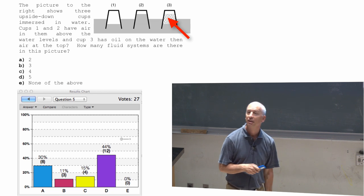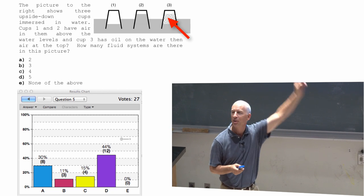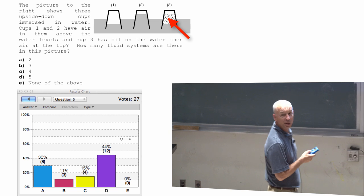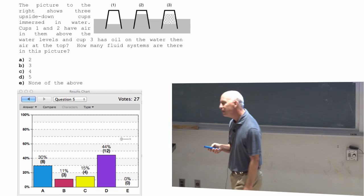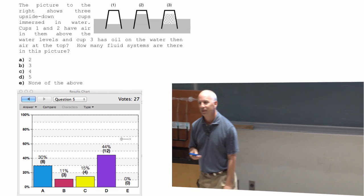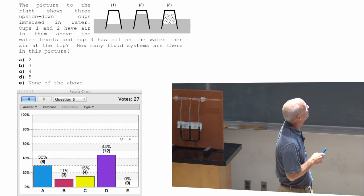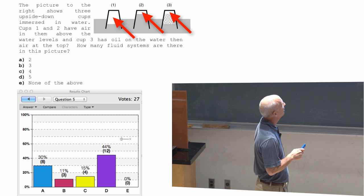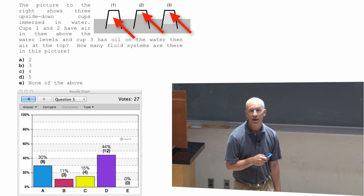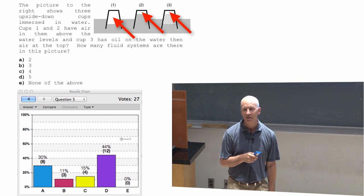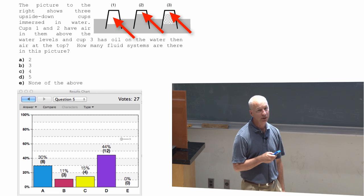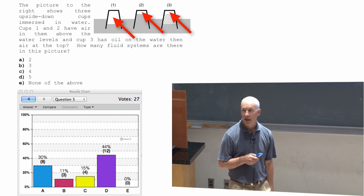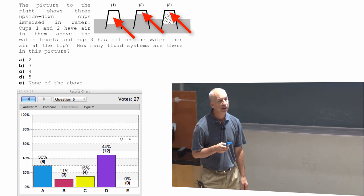How about the oil? Separate fluid system? Yeah, separate density. Both of those are liquids. Gases are also fluids. Turns out there's gas right there. There's air there, there's air there, and there's air up there. And those pockets of air are not connected to each other. They are three separate fluid systems.